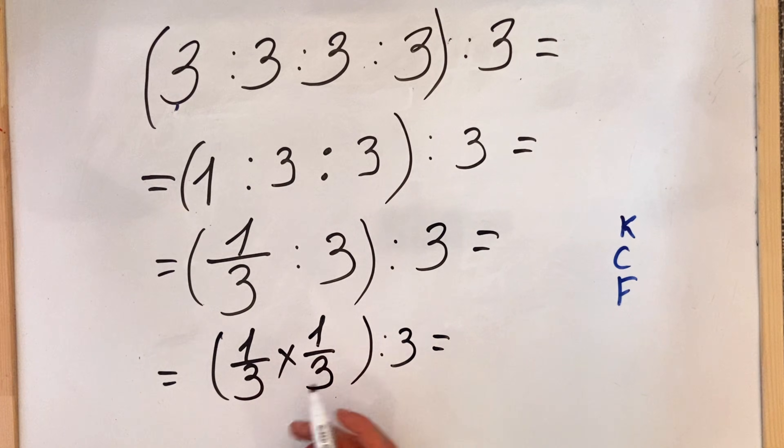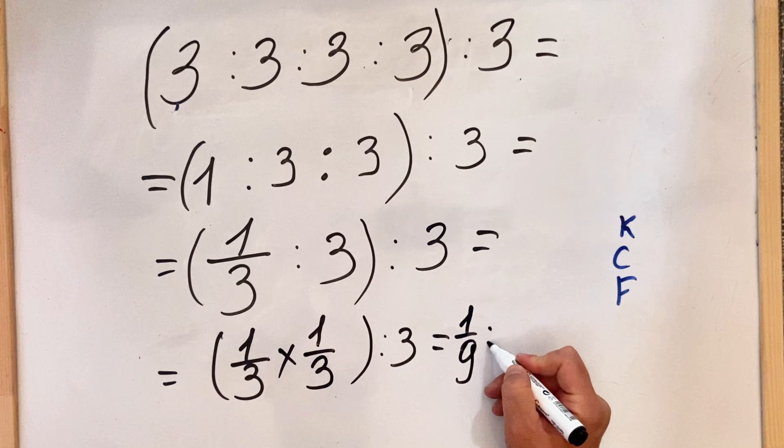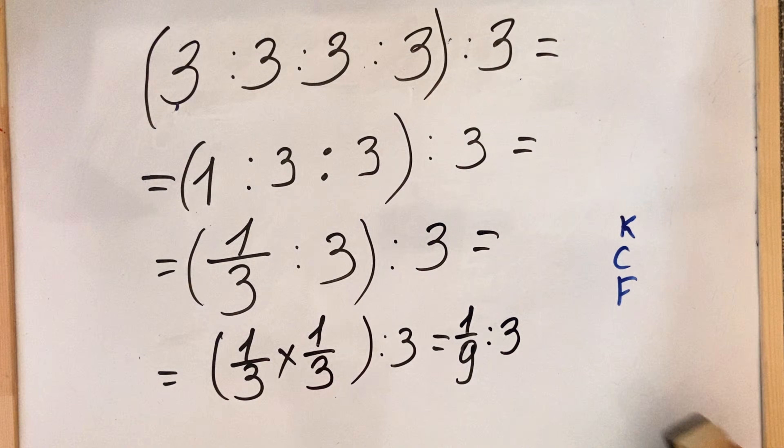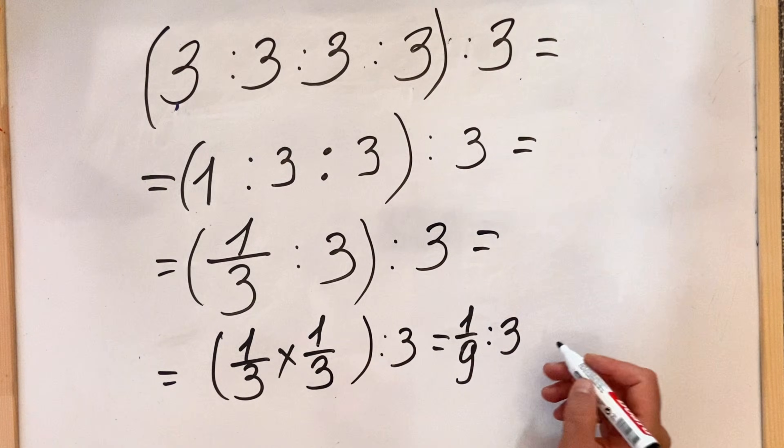All this divided by 3. Here it's 1 ninth, so we have 1 ninth divided by 3. And here we apply the same rule: we keep the first, we multiply, we change the sign, and we flip the second one.